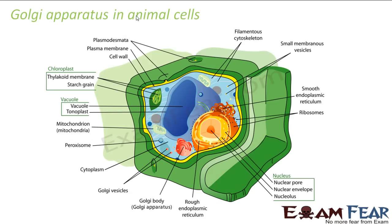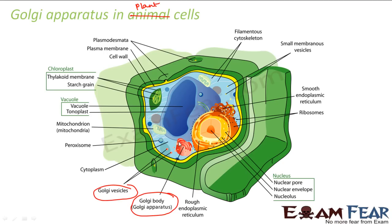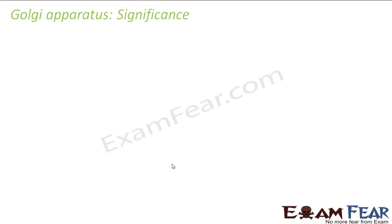In a plant cell, the Golgi apparatus and Golgi vesicles are arranged here and there — not at a specific place. There is a Golgi body present, but it is not necessarily always near the nucleus. In plant cells it can be scattered in the form of Golgi vesicles.